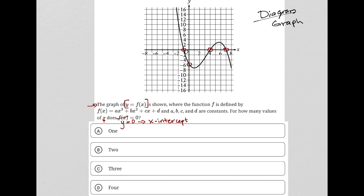How many x-intercepts do we have on this graph? We have 1 here, 2, and 3. Those are 3 places where the graph hits the x-axis. So our answer must be choice C, 3.